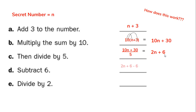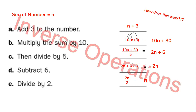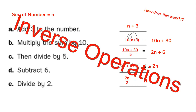Now I have 2n + 6 and I have to subtract 6: 2n + 6 − 6. Adding 6 and subtracting 6 are the inverse, the opposite of each other, so they cancel each other out — I'm left with just 2n. My last step says divide by two: 2n ÷ 2 equals just plain old n. So we're back to our original number. The reason this number trick works is because we are using inverse operations — we are reversing all of the things we did at the beginning.